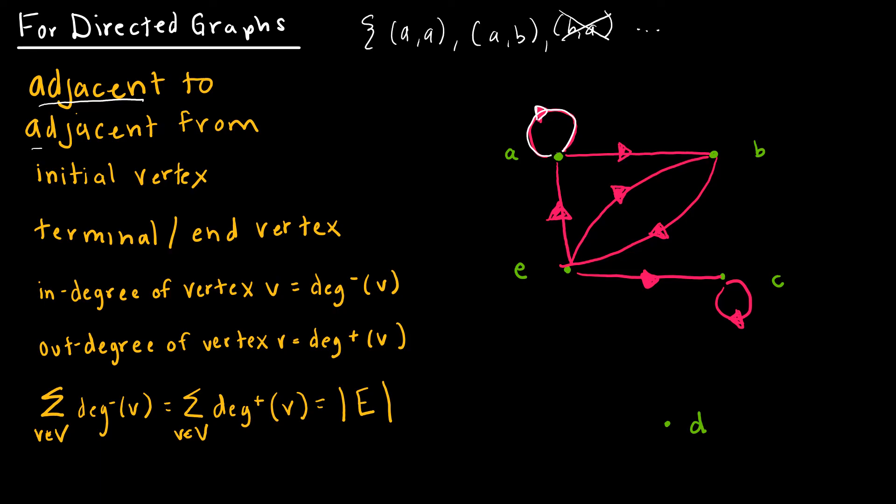So before we just said adjacent to, meaning that they were connected with an edge. And now we're saying, yes, you can have adjacent to and adjacent from. So we're going to look at some examples specifically using this ordered pair A comma B. If we were using the term adjacent to, we would say A is adjacent to B. But B is adjacent from A. So the initial vertex is that first vertex, but the terminal or end vertex is the second vertex. So again, it's pretty easy terminology so far.